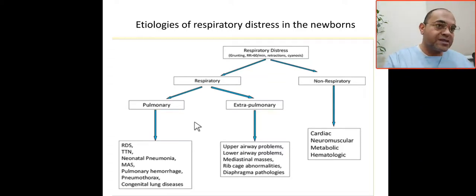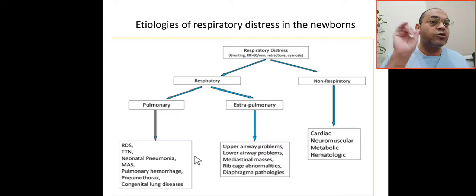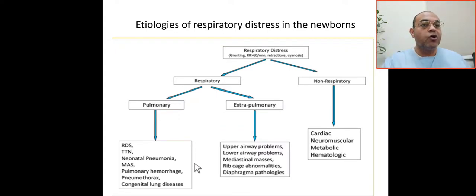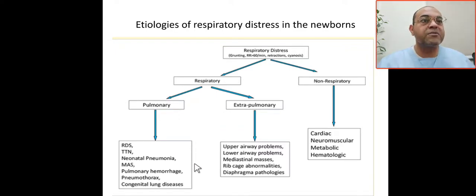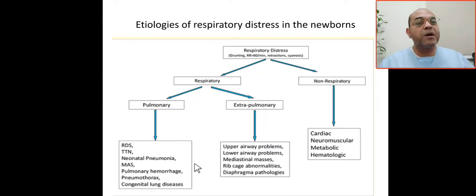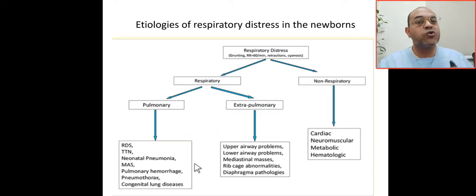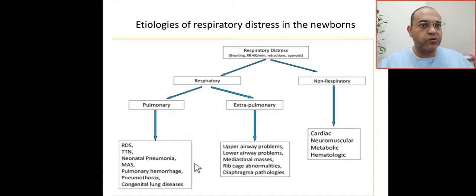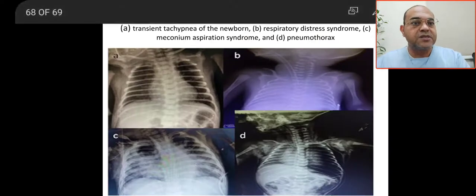Extra-pulmonary causes include upper or lower airway obstruction, diaphragmatic paralysis, diaphragmatic eventration, congenital diaphragmatic hernia, rib abnormalities such as skeletal dysplasia or asphyxiating thoracic dystrophy, and mediastinal masses.